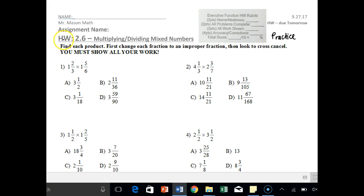The first set of instructions says find each product, first change each fraction to an improper fraction if it's not already a mixed number, then look to cross-cancel. You must show all your work. This has to be neat and complete. I'll start off by helping us out here and do the odds.